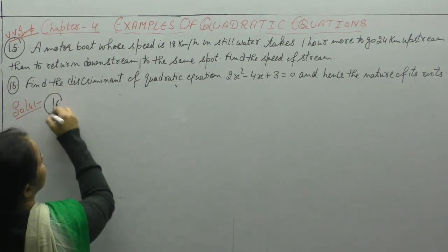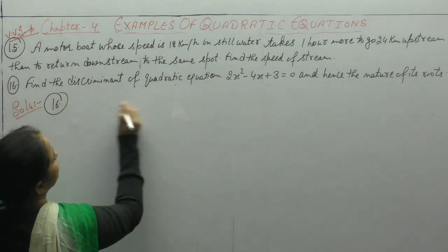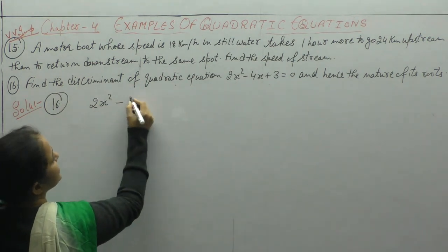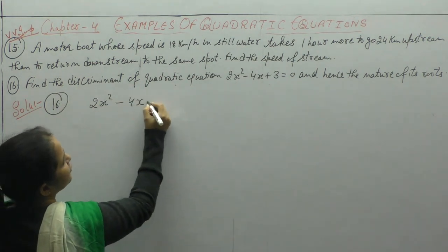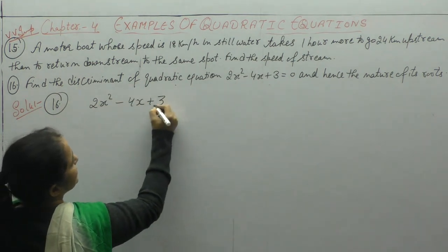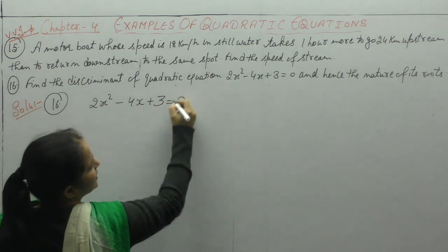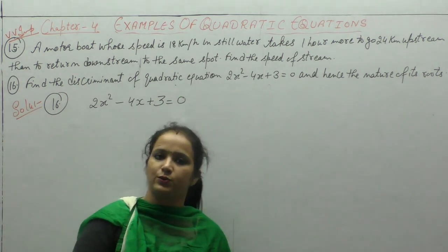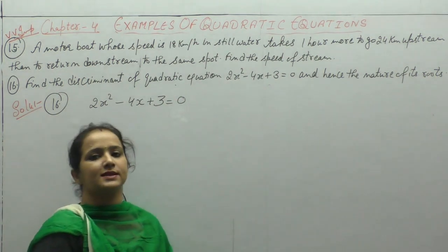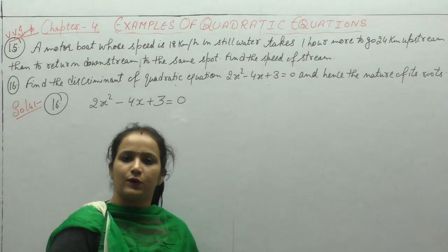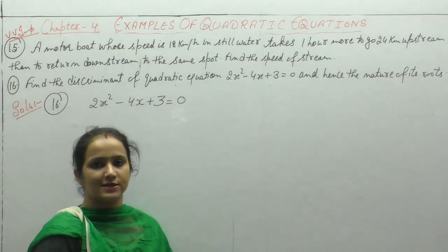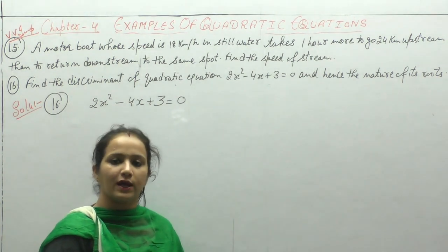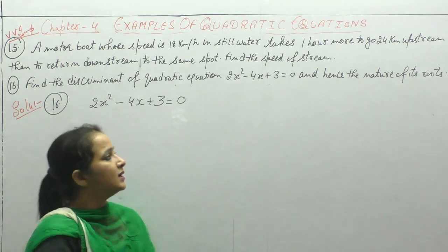Next example: Find the discriminant of the quadratic equation 2x squared minus 4x plus 3 equals 0, and hence determine the nature of its roots — whether they are real and distinct, real and equal, or no real roots exist.